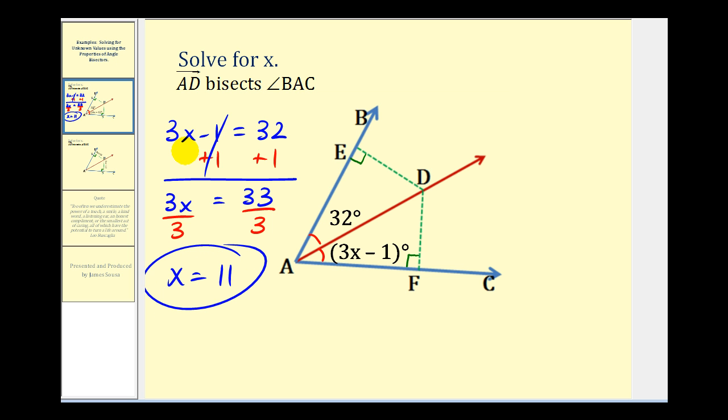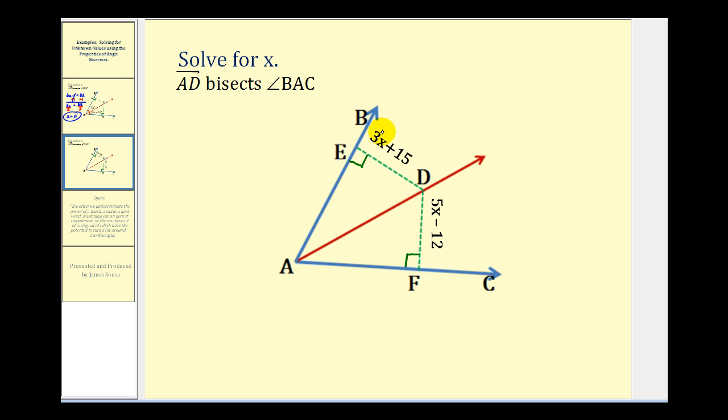Let's take a look at one more example. Again we're given that ray AD bisects angle BAC. As we just stated, we know that angle BAD is congruent to angle DAF.